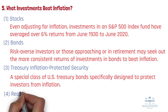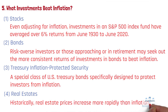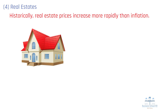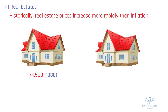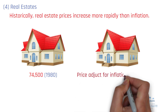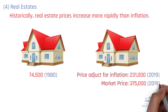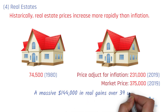Fourth, Real Estate. Historically, real estate prices increase more rapidly than inflation. For example, long-term house prices have historically outstripped inflation. An average house sold in the U.S. was $74,500 in 1980, which adjusted for inflation is worth $231,000 in 2019 prices. By comparison, the average house sells for $375,000 in 2019 — a massive $144,000 in real gains over 39 years.